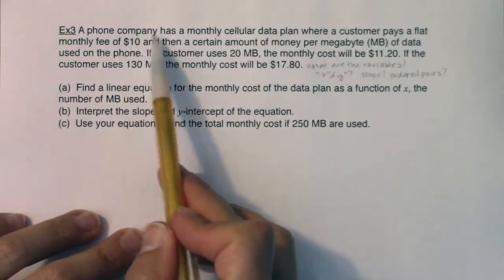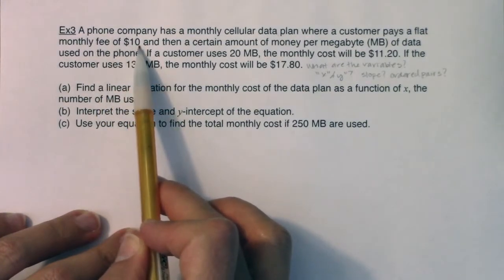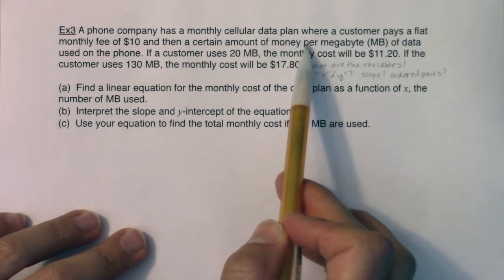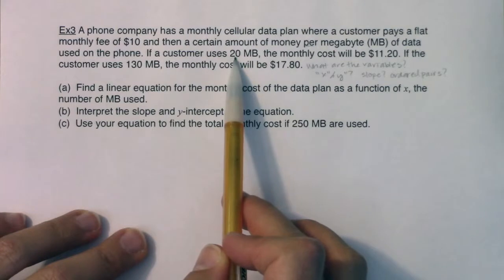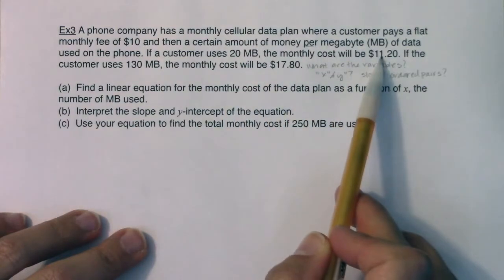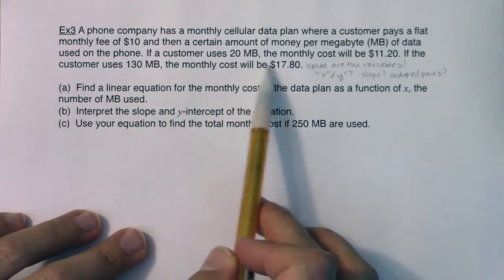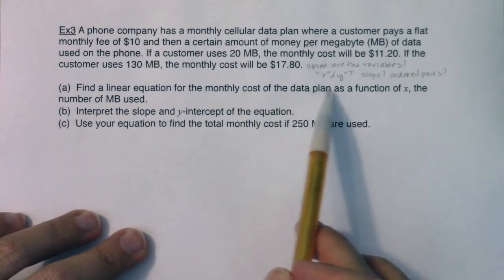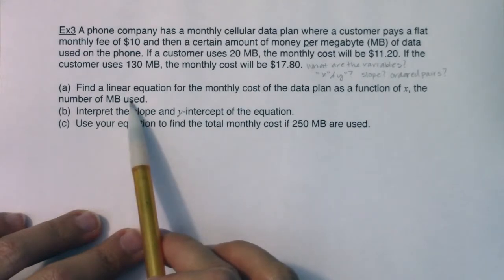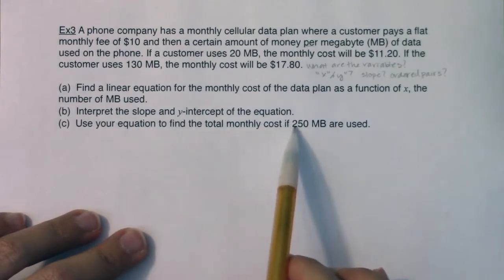A phone company has a monthly cellular data plan where a customer pays a flat monthly fee of $10 and then a certain amount of money per megabyte of data used on the phone. If the customer uses 20 megabytes, the monthly cost will be $11.20. If the customer uses 130 megabytes, the monthly cost will be $17.80. Find a linear equation for the monthly cost of the data plan as a function of X, the number of megabytes used, interpret the slope and y-intercept of the equation, and then use your equation to find the total monthly cost if 250 megabytes were used.